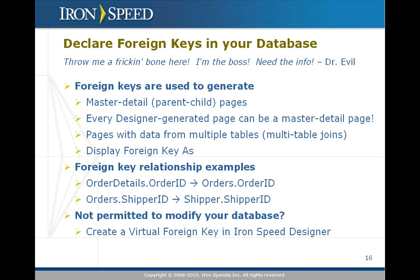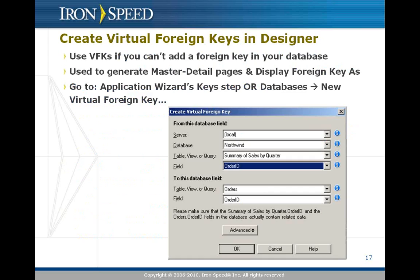If your DBA won't let you modify the database to add those foreign key relationships, you can declare a virtual foreign key in IronSpeed Designer — just like a virtual primary key, it does not modify your database. You're simply instructing IronSpeed Designer to treat a pair of fields between two tables as if they are a foreign key relationship, even though they're not expressly declared as such in your database. The best place to declare these virtual foreign keys is in the application wizard, because it defines them before the wizard creates pages that might take advantage of those virtual foreign keys.